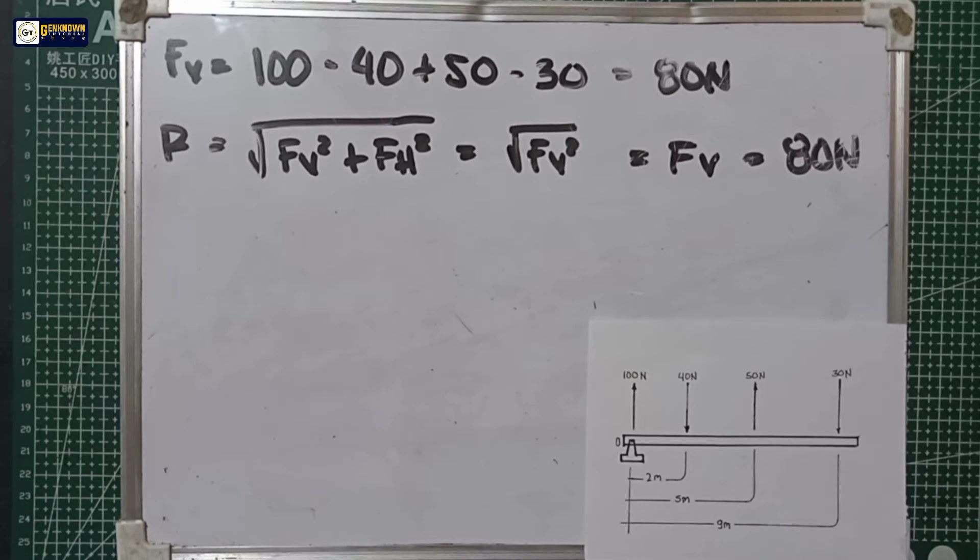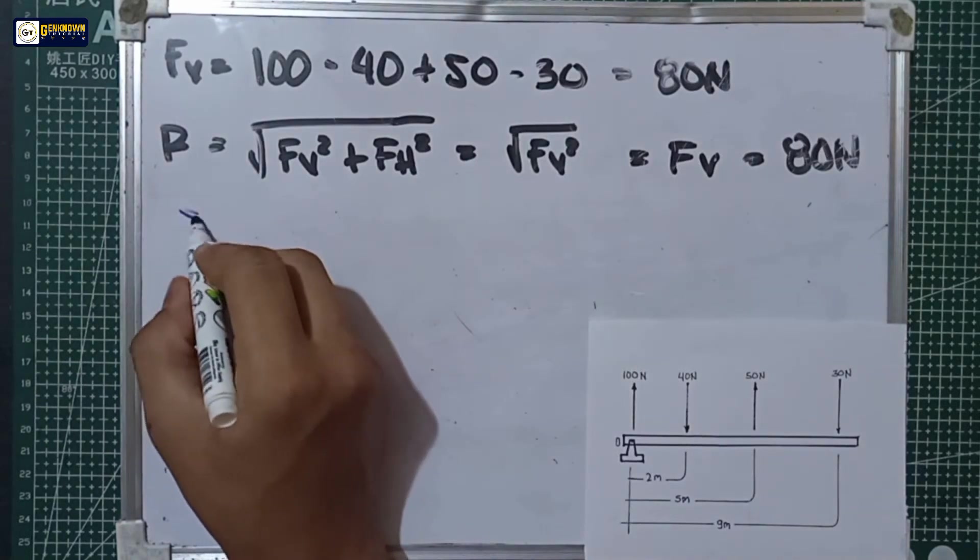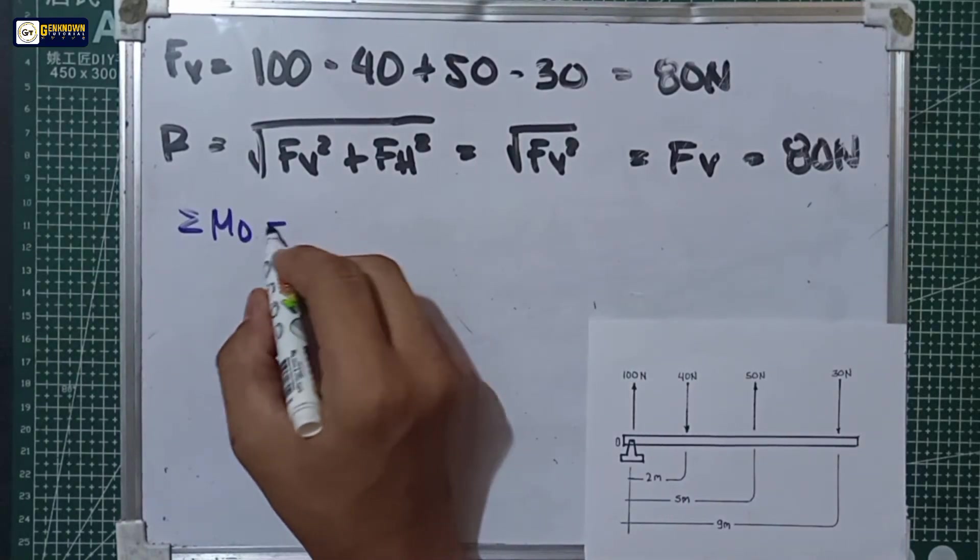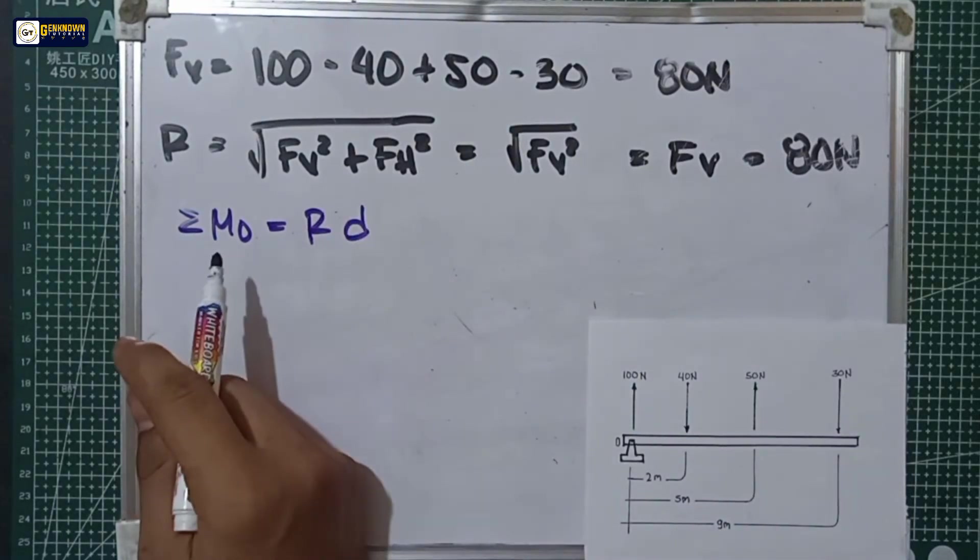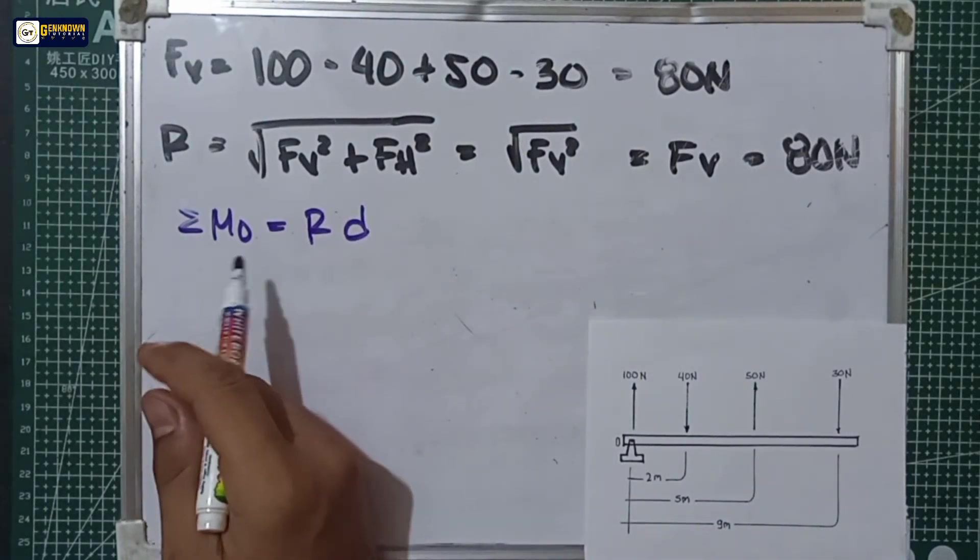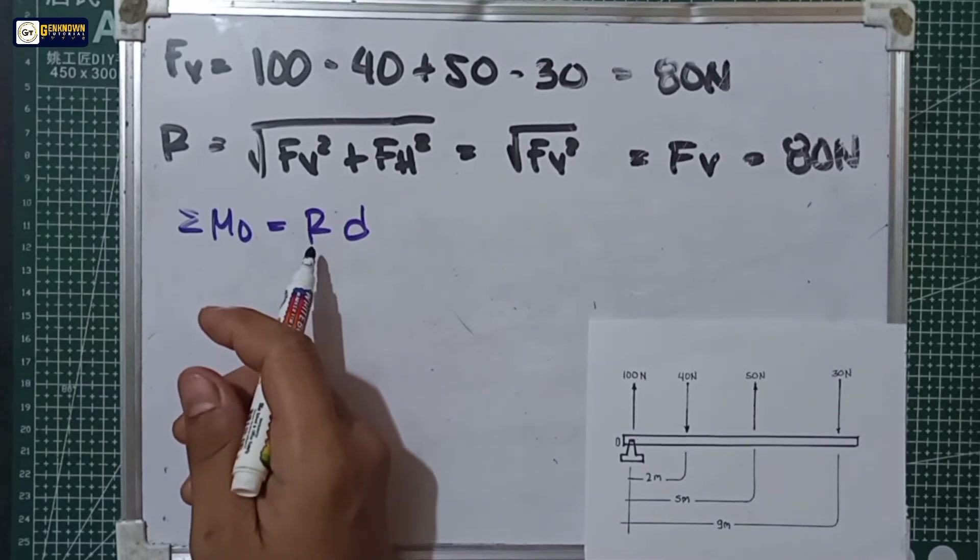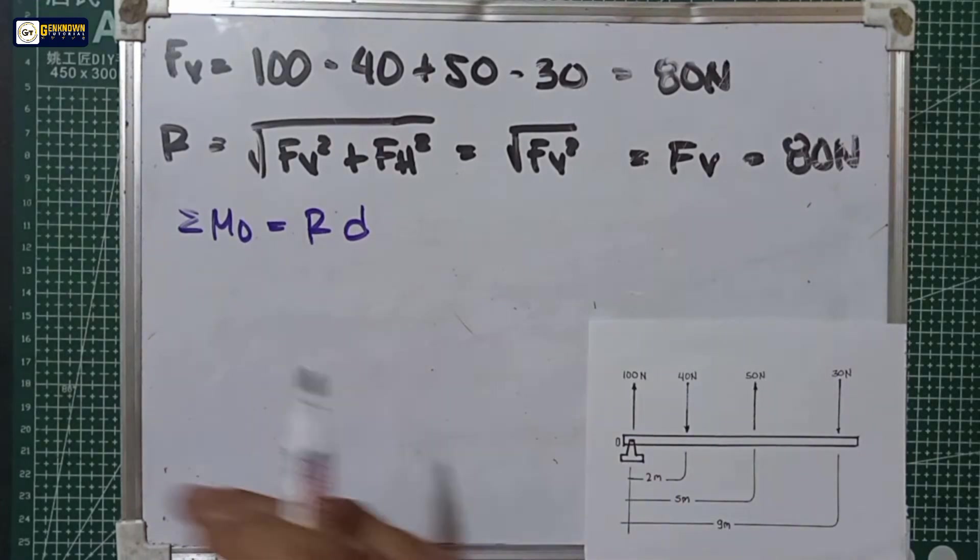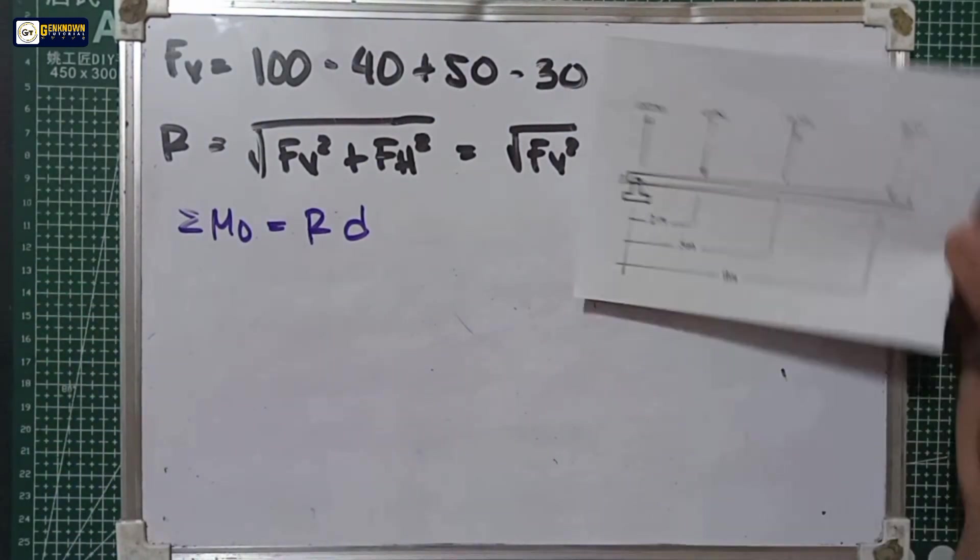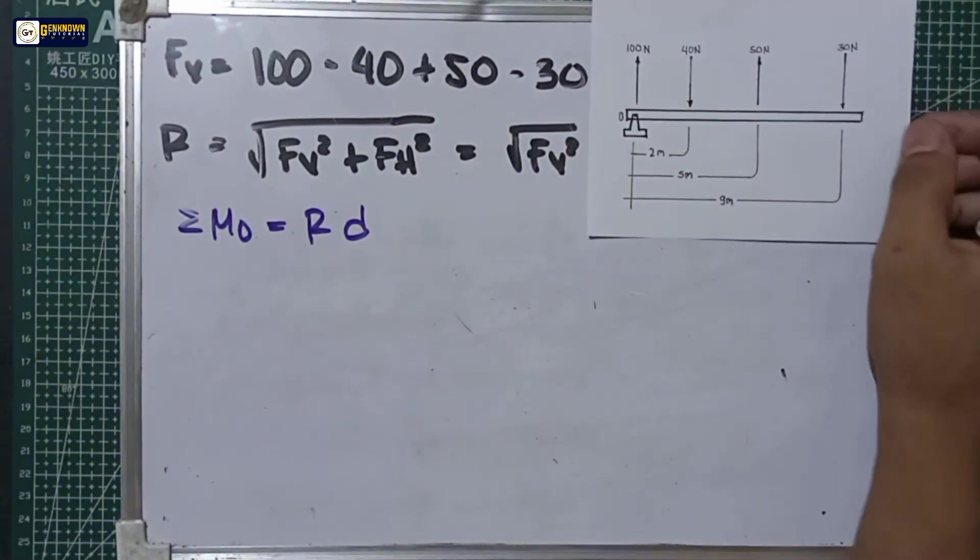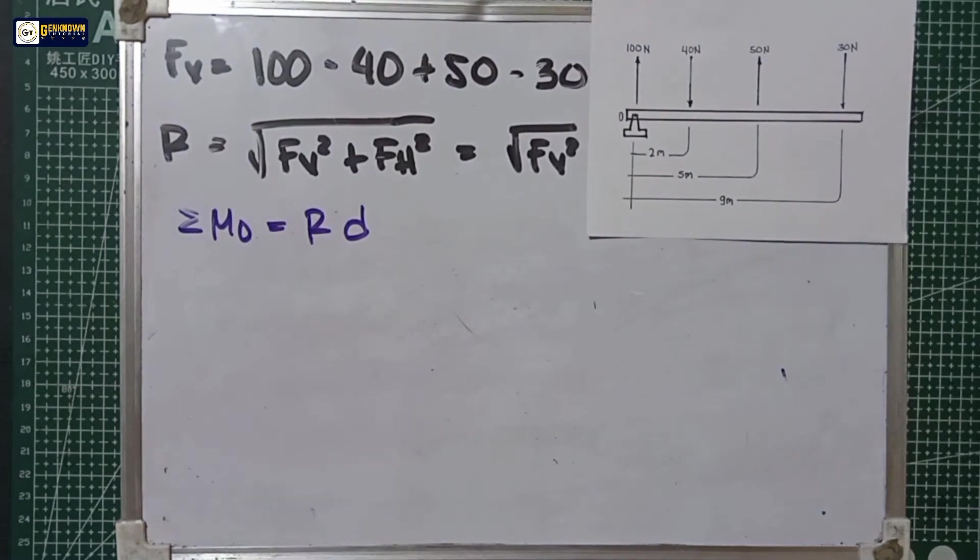The next step is to identify the unknown distance using the summation of moment is equal to Rd. The summation of moment is the summation of force multiplied by the distance, equal to the resultant multiplied by the position of the resultant. So we'll use this to find the unknown d or the unknown position of the resultant.